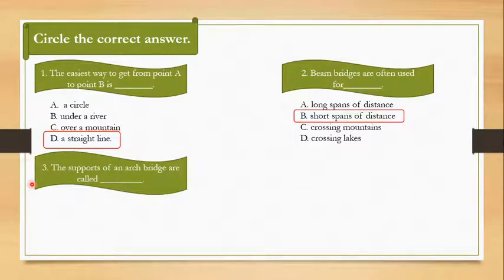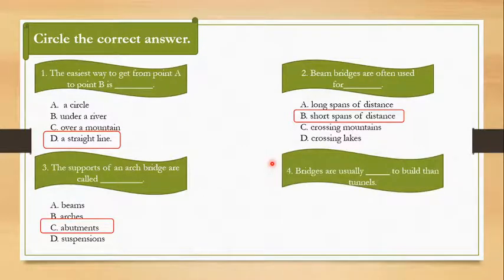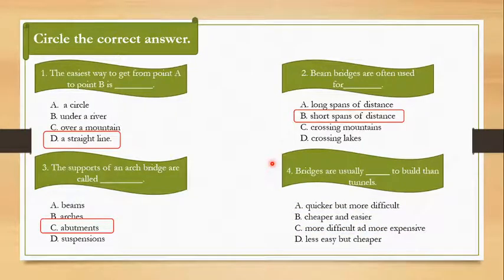The third MCQ is: the supports of an arch bridge are called beams, arches, abutments, or suspensions. It's not called beams or suspensions because we don't have these in an arch bridge. The base or the support is called abutments. The fourth MCQ: bridges are usually quicker to build than tunnels. Options are quicker but more difficult, cheaper and easier, more difficult and more expensive, less easy but cheaper. It is always easier and cheaper to build a bridge than a tunnel.